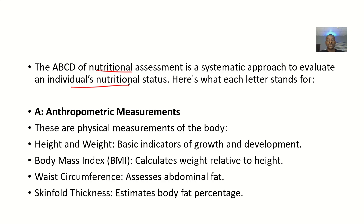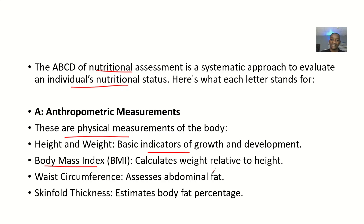Letter A stands for anthropometry measurements — these are physical measurements of the body. You measure the person's height and weight, and from those you calculate the Body Mass Index (BMI), which indicates whether the person is normal weight, underweight, overweight, or obese. Waist circumference is used to assess abdominal fat, also called abdominal obesity. Skinfold thickness is used to measure subcutaneous fat.